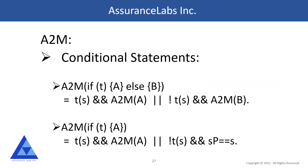For conditional statements: if you have 'if T then A else B', we generate the equation T(s) ∧ A2M(A) ∨ ¬T(s) ∧ A2M(B). If you have 'if T then A' with no else, we generate T(s) ∧ A2M(A) ∨ ¬T(s) ∧ sp = s.